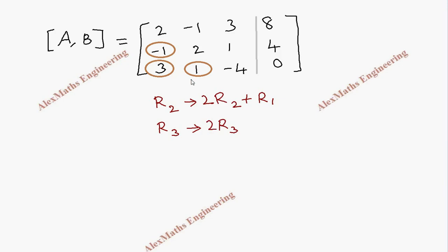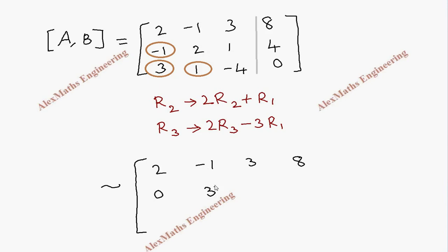So I take 2 times R3 minus 3 times R1; that becomes 0. Now in the augmented matrix, the first row is written as it is. For the second row, 2 times R2 added with R1: -2 plus 2 becomes 0; multiplying by 2 gives 4, 4 minus 1 gives 3; then multiplying and adding gives 5; 8 plus 8 is 16. For the third row: 2 times the element is 6, minus 3 times the element is again 6, so it becomes 0.